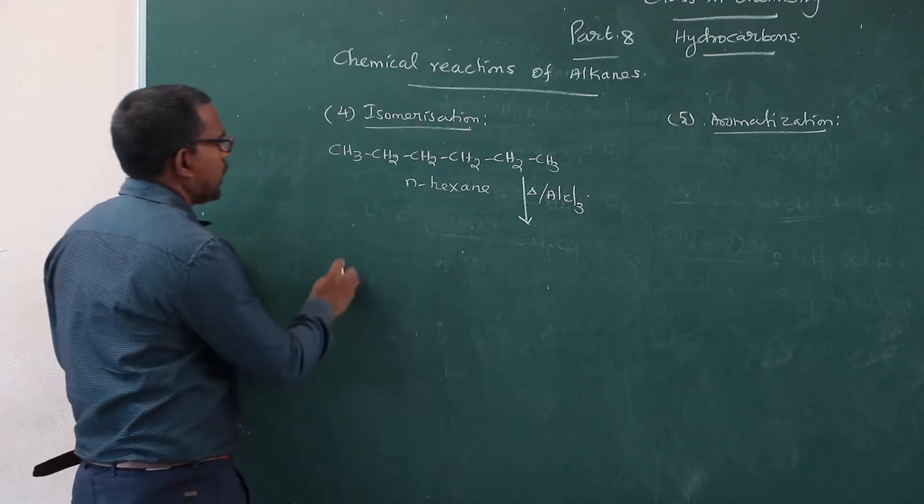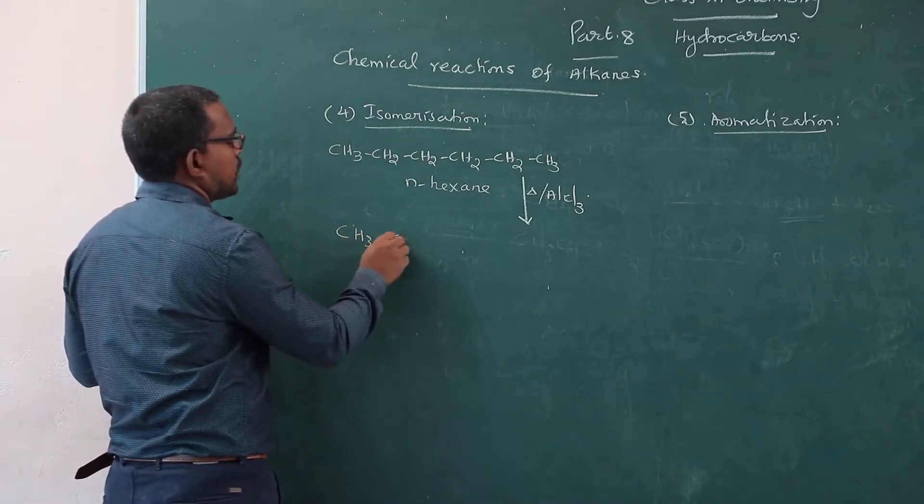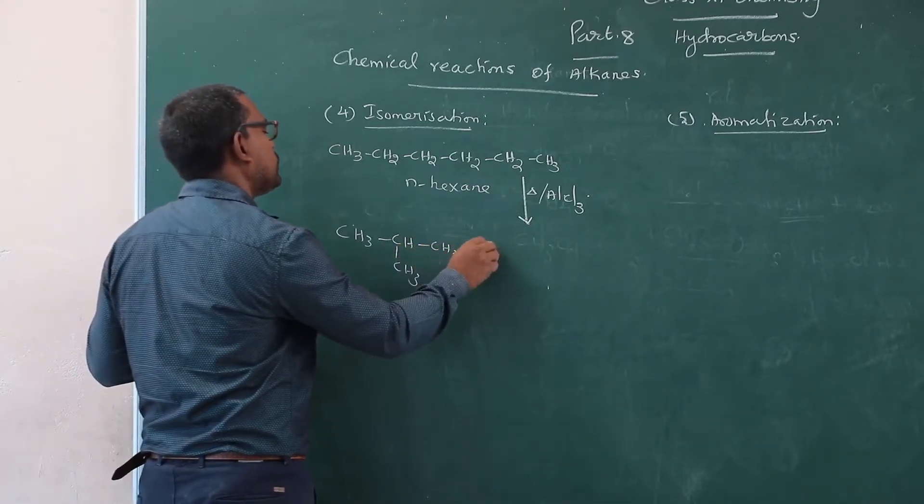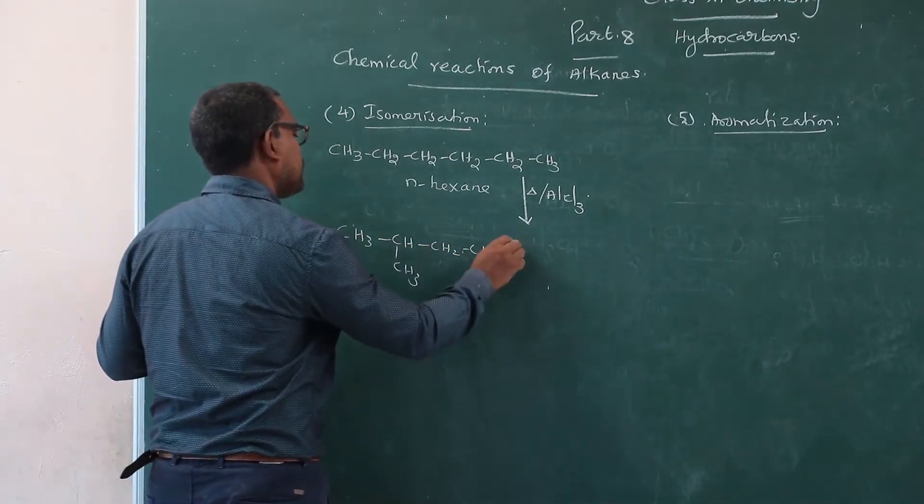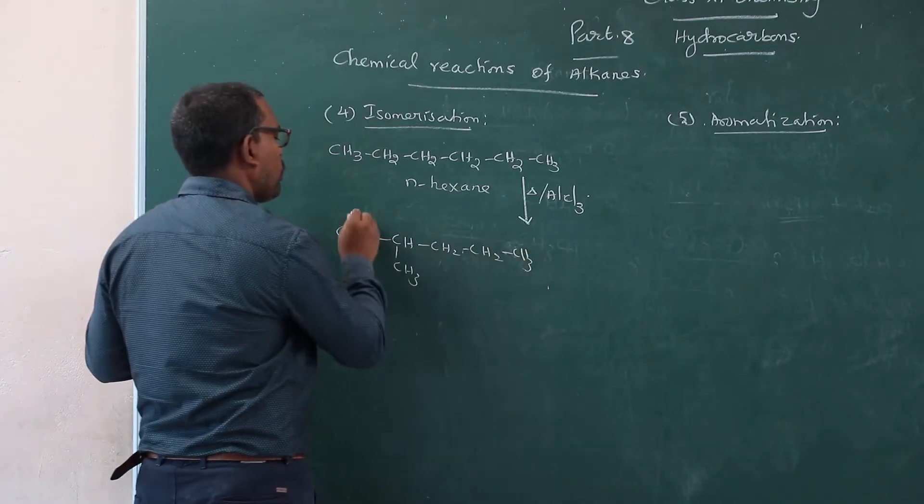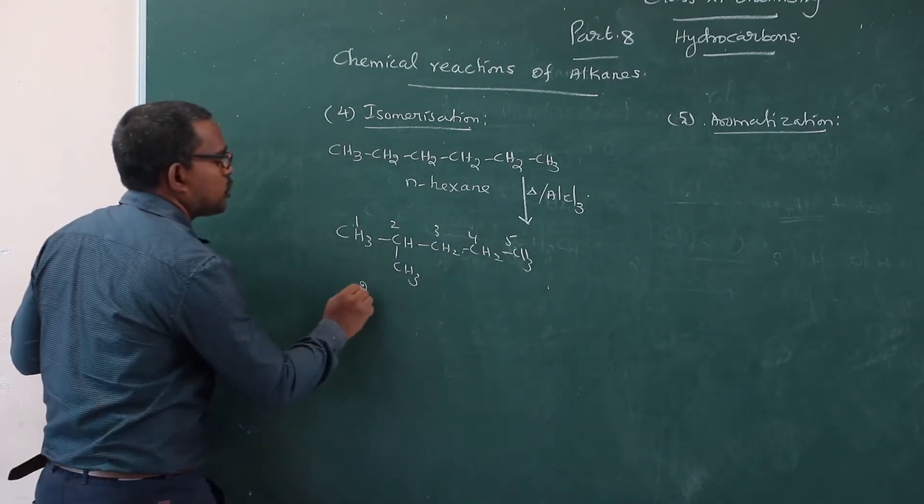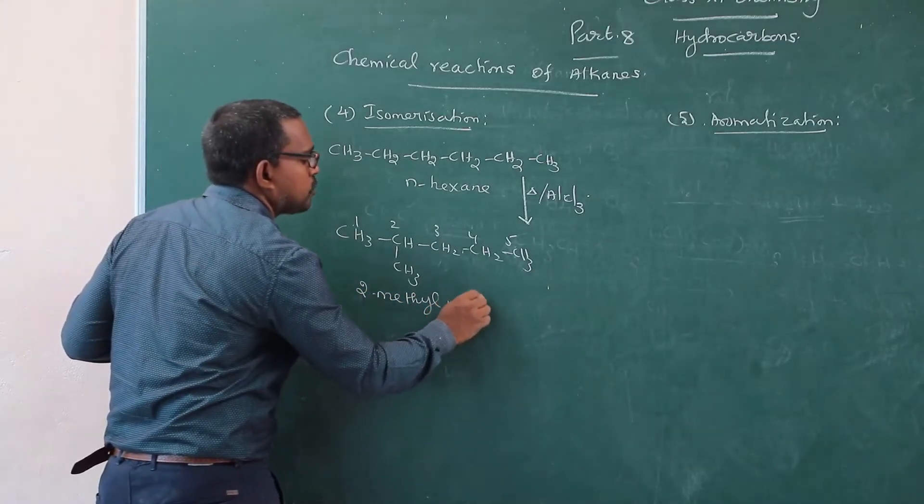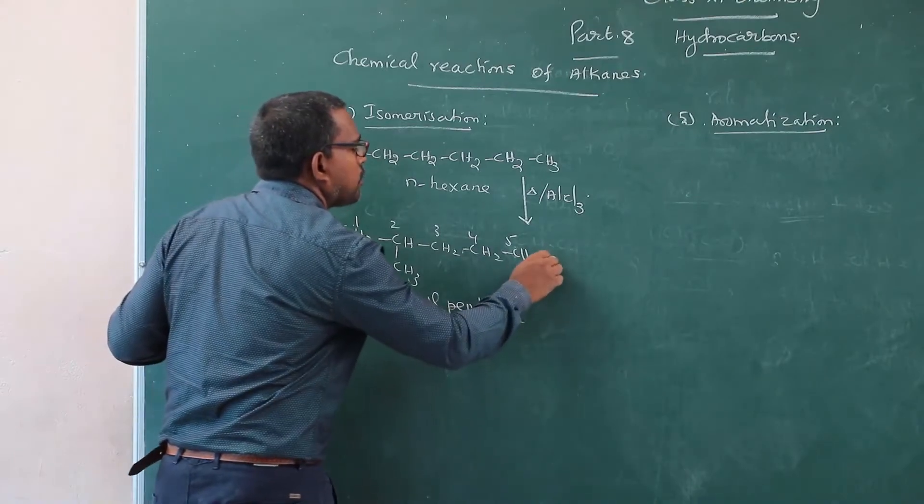So, what are the possible products? CH3-CH(CH3)-CH2-CH2-CH3. 1, 2, 3, 4, 5. That is 2-methyl pentane, 2-methyl pentane as the product.